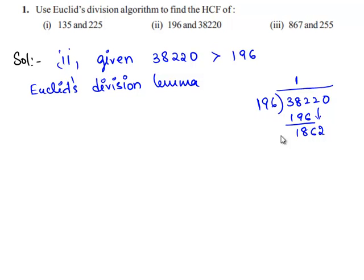196 goes into 1862 nine times. 196 times 9 is 1764, and the remainder is 98.